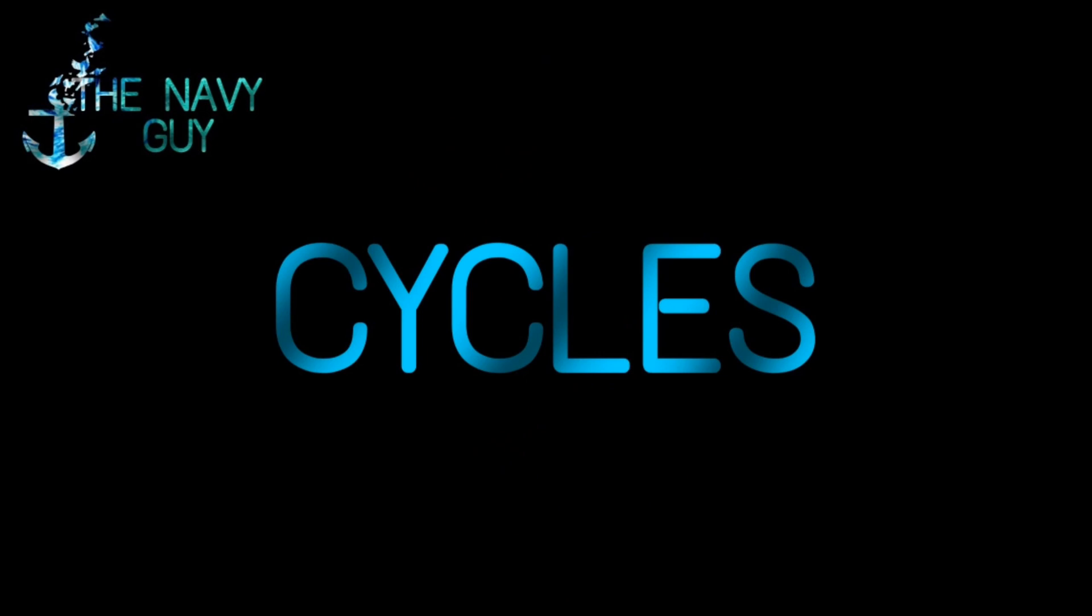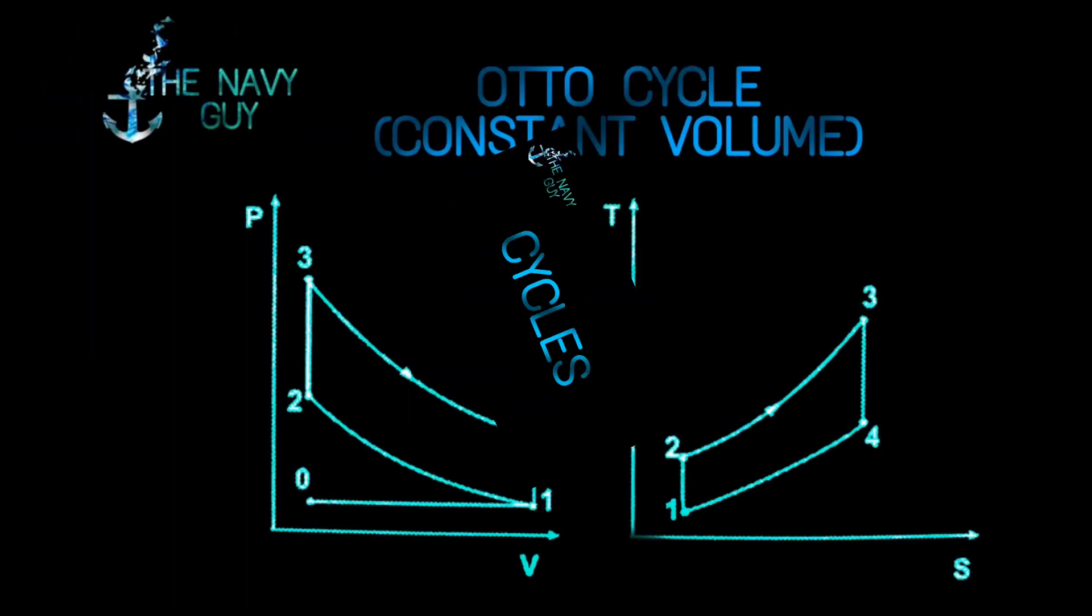So our first topic is cycles. A cycle is a sequence of processes that involve transfer of heat and work in or out of the system. Our first cycle is Otto cycle, also known as constant volume cycle. There are two graphs shown below: first one is pressure vs volume and second is temperature vs entropy. Let's talk about the processes involved.